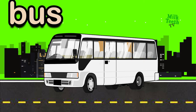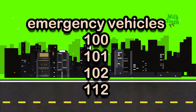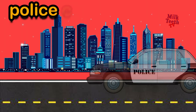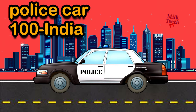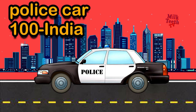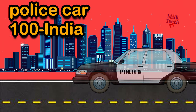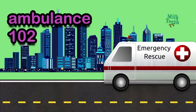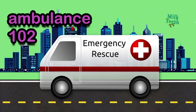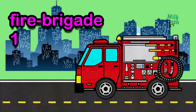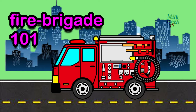Now we will learn about the emergency vehicles. Emergency vehicles are those which we call in an emergency. Police car — we dial the number 100 for the police car. Ambulance — we dial 102 for the ambulance. Fire brigade — we dial 101 for the fire brigade.